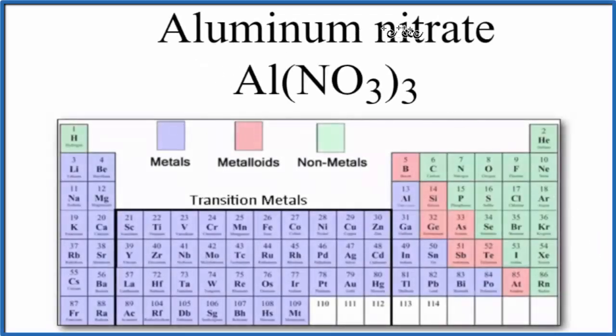In this video, we'll look at whether aluminum nitrate, that's Al(NO3)3, is ionic or covalent.